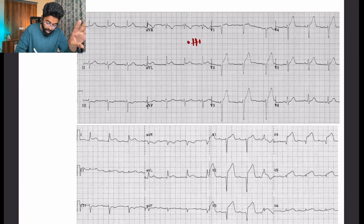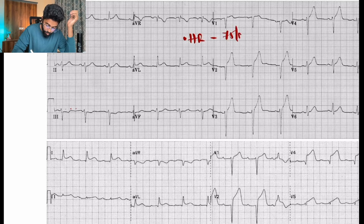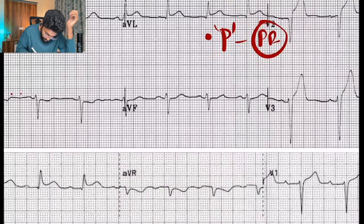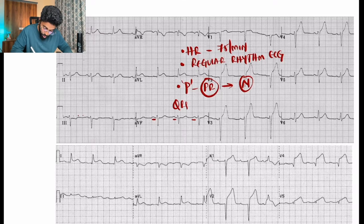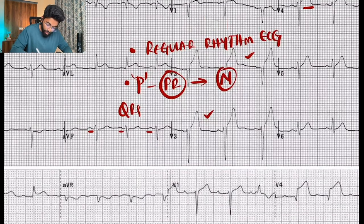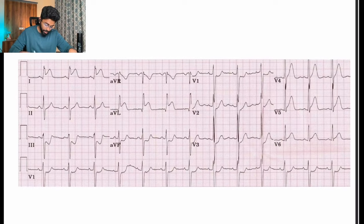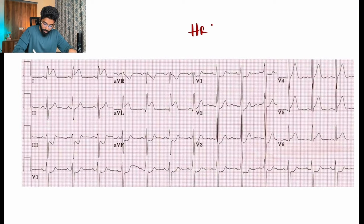For this ECG: heart rate is 75 per minute, regular rhythm, P wave and PR normal. In leads V2, V3, and V4, we can clearly see tall broad T waves with ST taken along — we can clearly say this is anterior wall MI.